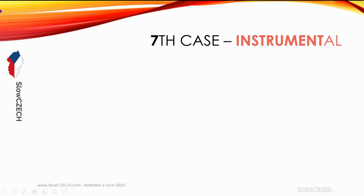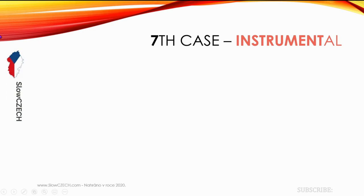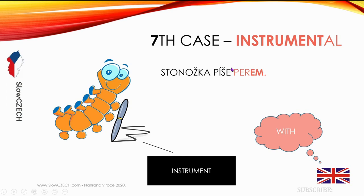The Instrumental, or seventh case, is used when we are using a tool, a means, or some instrument. 'Stonožka jede autobusem' — the 'em/m' ending means 'by bus.' It's like saying she is going by bus without needing to add the word 'by.' Another example: 'Stonožka píše perem' — she is writing with a pen. We don't need the preposition 'with' — we know she is using the instrument thanks to the ending. That's why this case is called the instrumental case.